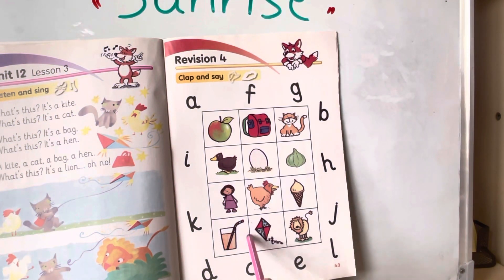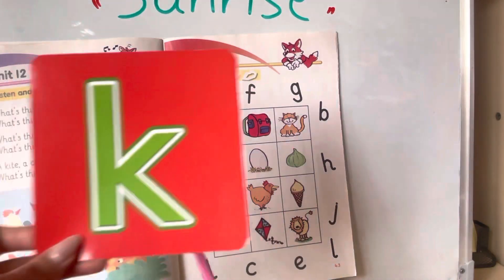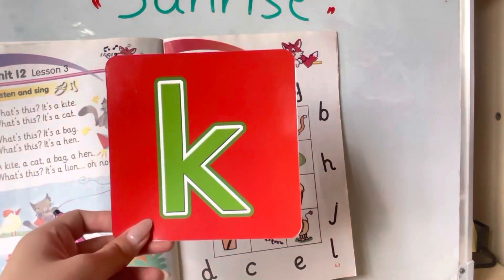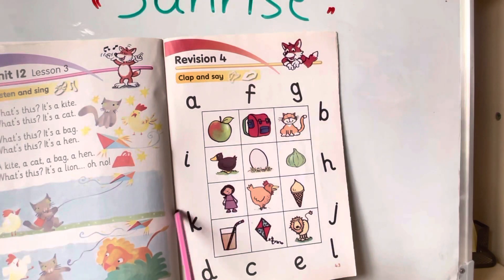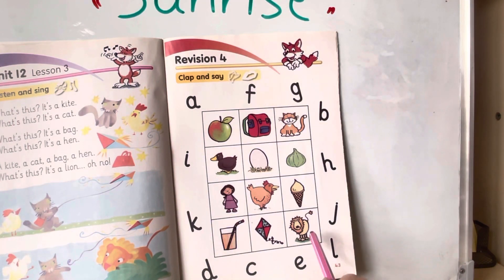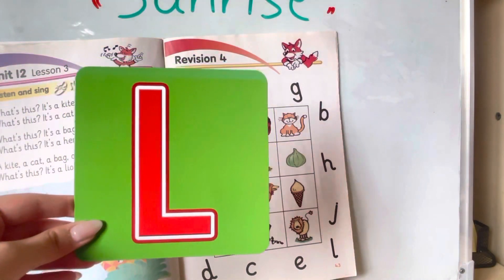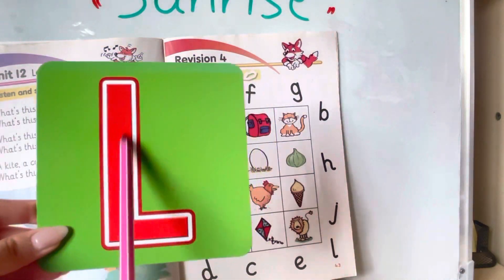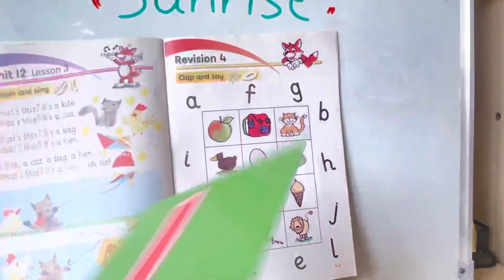And here we have a kite. Kite starts with the letter K. And here we have letter K. And the final picture — here we have a lion. Lion starts with the letter L. This is capital L and this is small l.